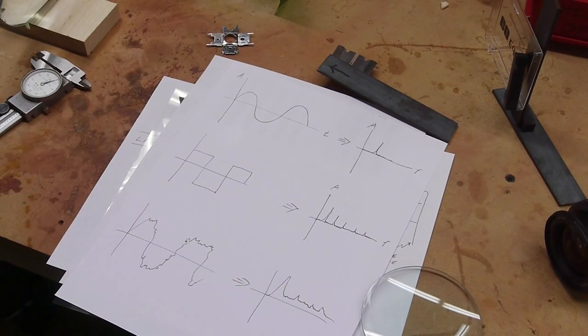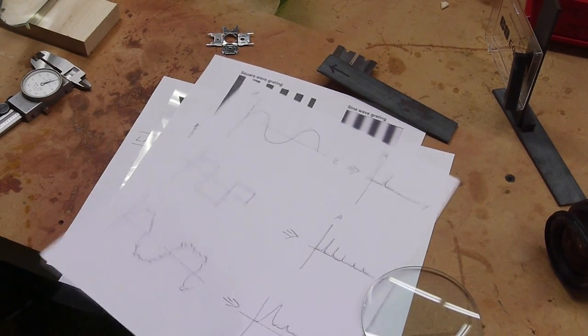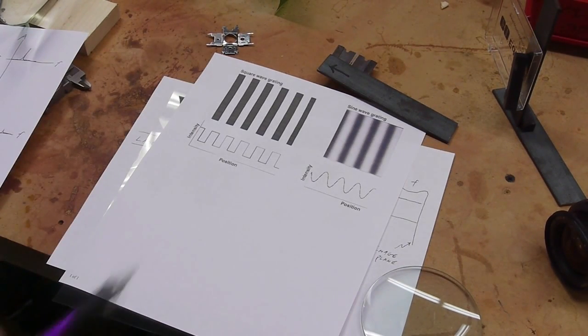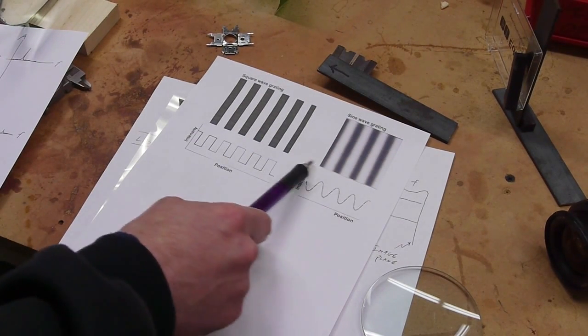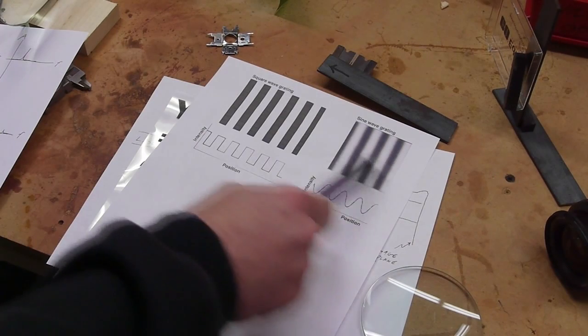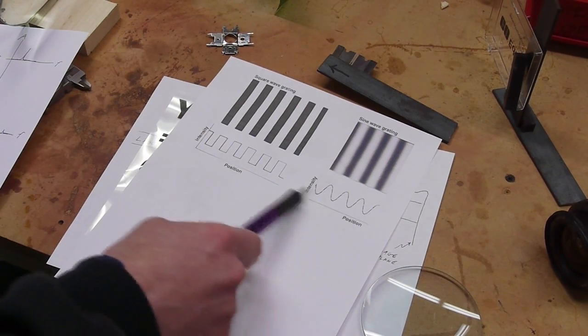The same concept can be applied to things in the spatial domain. Let's say we had an image that looks like this - it's basically a sine wave of intensity across the x-axis. Every scan line is the same and they all have this intensity pattern.